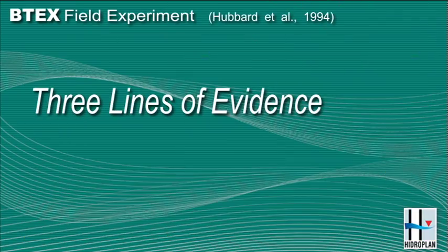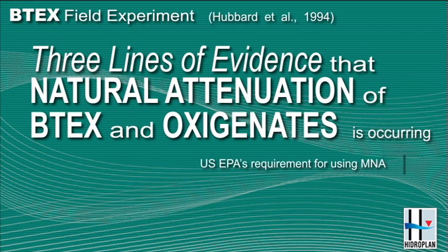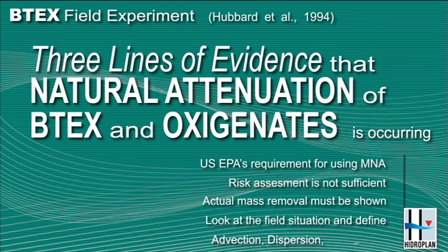So we'll look at these experiments and try to apply three lines of evidence of natural attenuation as the US EPA requires. Interestingly, the US EPA requires not just a risk analysis that shows there's no environmental risk or an acceptable environmental risk — their approach requires there to be remediation, and they define that as mass removal. So natural attenuation has to remove mass, not just dilute it. What we'll do is have a look at the field situation and see if we can sort out advection, dispersion, and retardation, and then assess the degree of reaction.